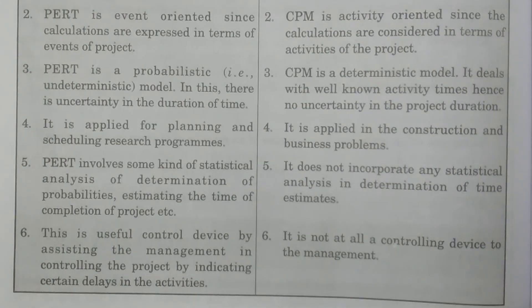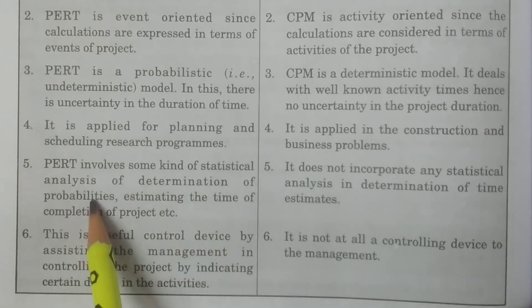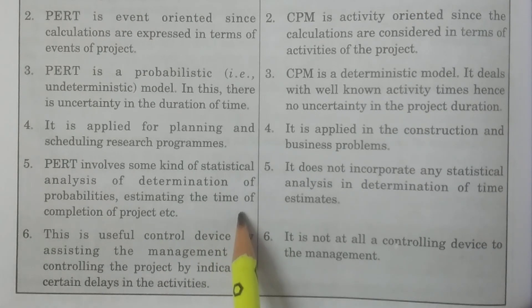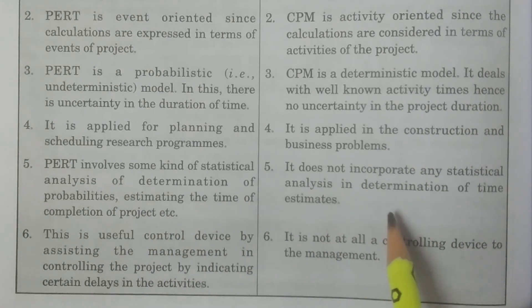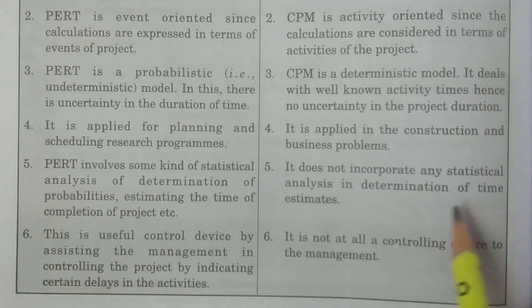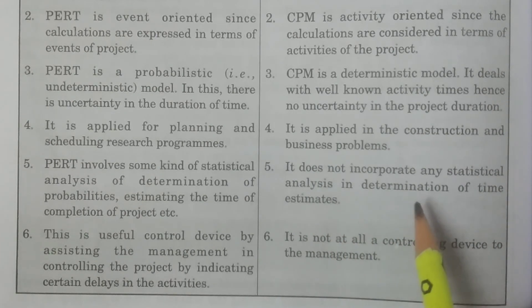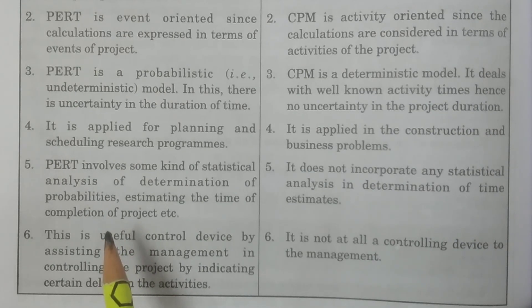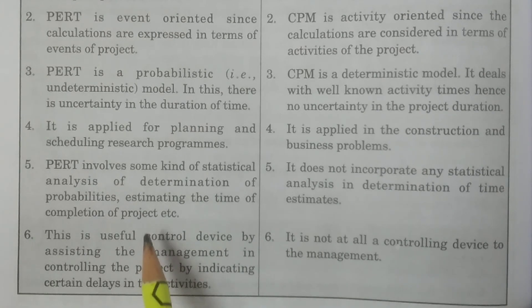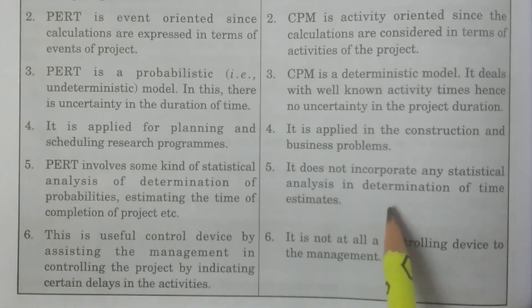Coming to the fifth point: PERT involves statistical analysis for determining probabilities and estimating time periods for completing the project. Whereas CPM does not incorporate any statistical analysis — probabilities are not required in CPM. PERT depends on finding the probable completion of a particular job or the entire project, estimating time periods and variances. CPM does not involve any statistical analysis for determining time estimates.